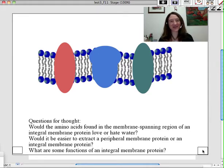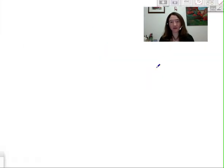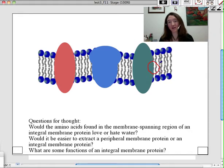As that animation comes to a close, I have a couple of questions for thought for all of you. First off, would the amino acids found in the membrane-spanning region of an integral membrane protein love or hate water? Recognize that this region of the protein is really primarily exposed to just the hydrophobic tails of the phospholipids. So these hydrophobic tails are coming in contact with the particular amino acids that are in that region of the protein. So wouldn't we expect to find things like phenylalanine and valine and isoleucine and all of those water-hating amino acids?